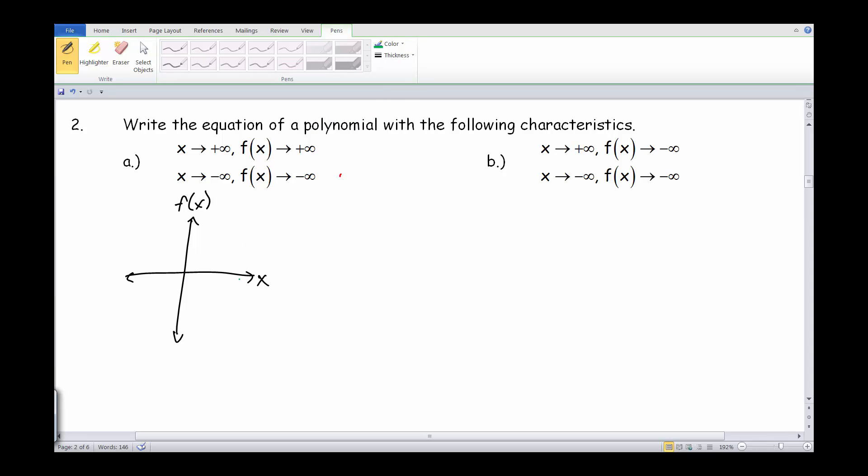As x is going towards positive infinity, it looks like our f of x, our function is going towards positive infinity so we should see an end behavior doing something like that. Now as x goes towards negative infinity, so as you go out this way, f of x is going towards negative infinity, so we'd be going down.